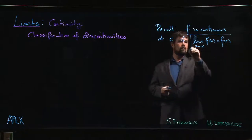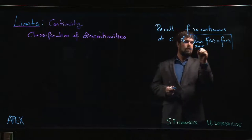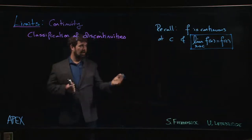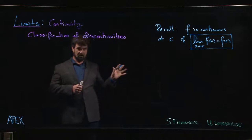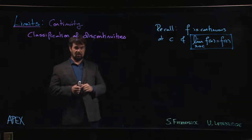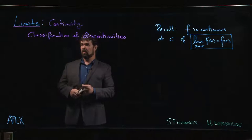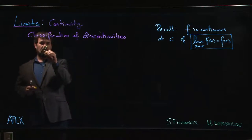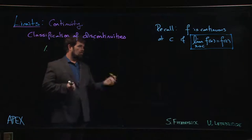Another question is what happens if that fails. Can we say anything about the function if it's not continuous? If this definition is not satisfied, what can we say? Sometimes we can't say much, but there are certain cases where the function fails to be continuous in predictable, understandable ways.